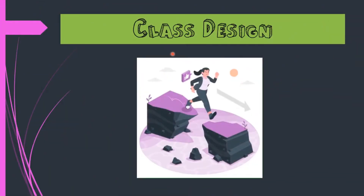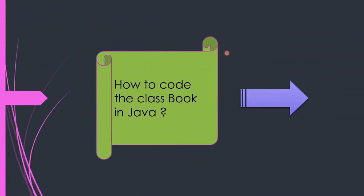Let us proceed to our first topic which is class design. As you can remember in our previous video, we had taken an example of a book to understand about object oriented programming, the concept of class, data members and method members. Using that same example, now we are going to create the class book and use some of the method members and data members that we discussed in our previous video.